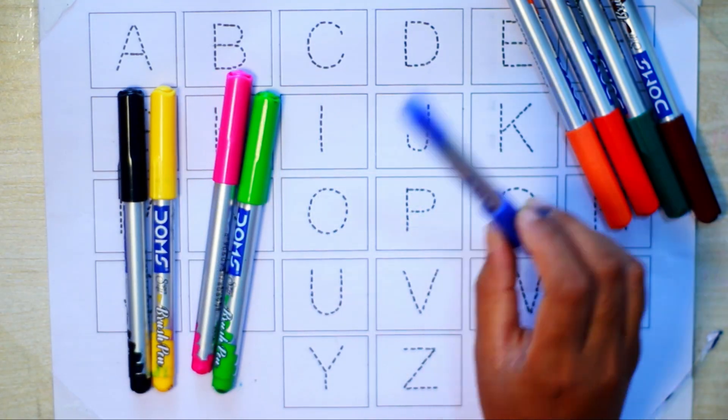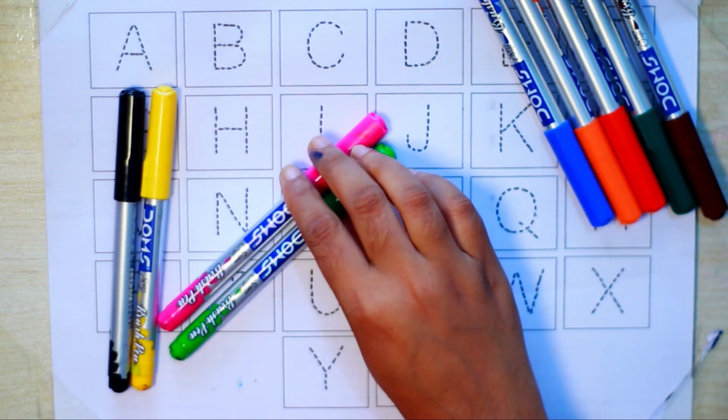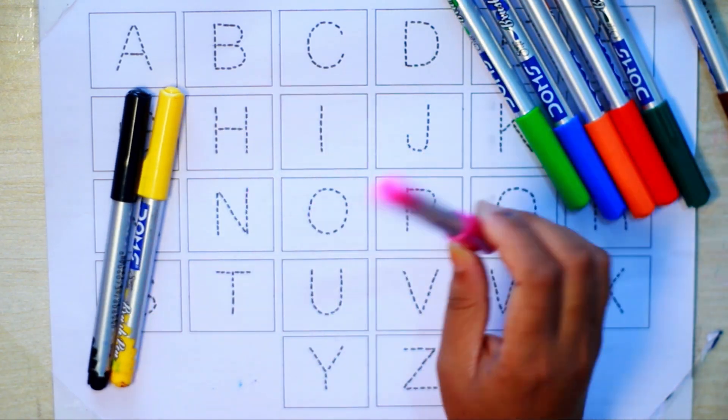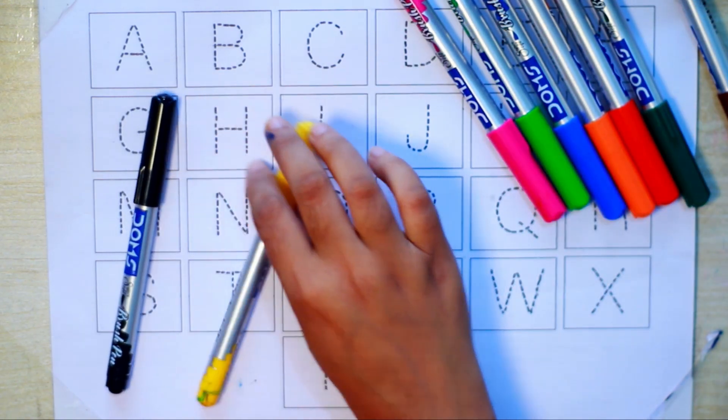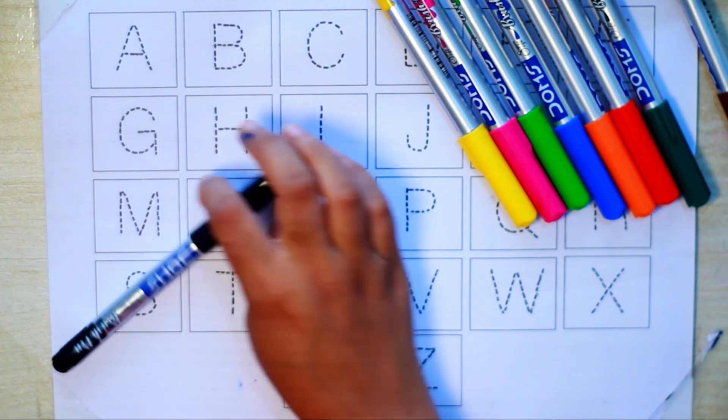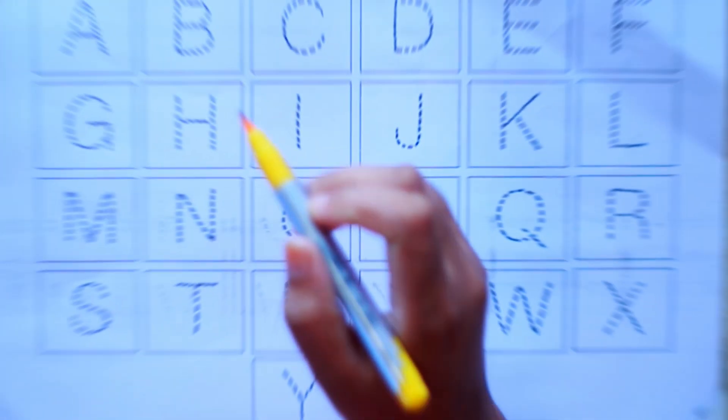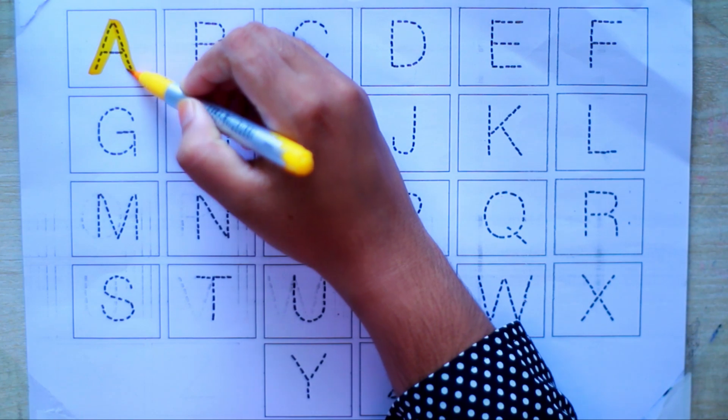Blue color, light green color. Now I know my ABC. Yellow color and black color, let's start. Yellow color A, A, B.